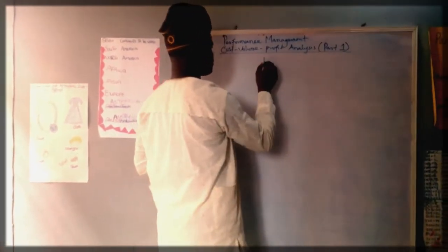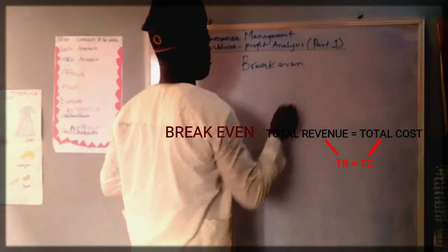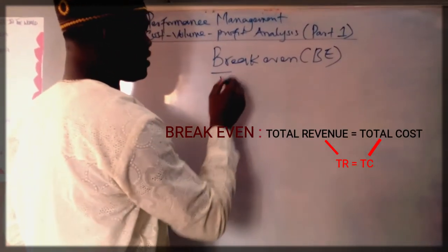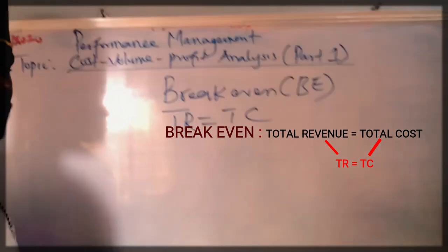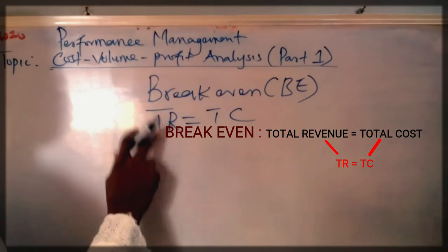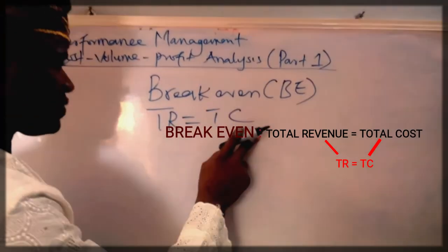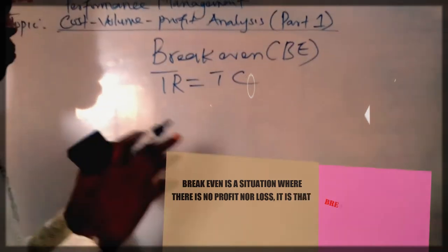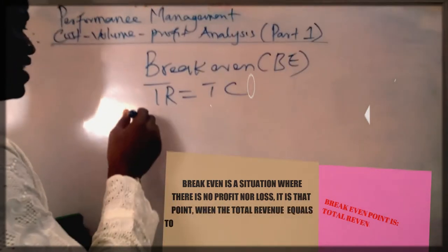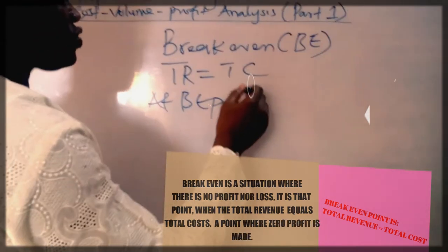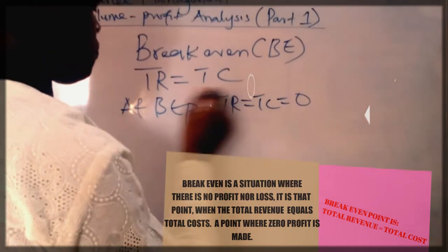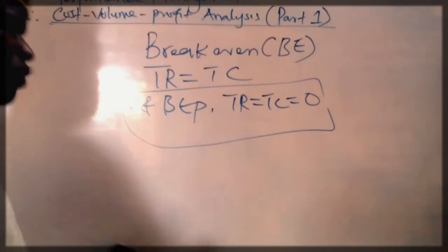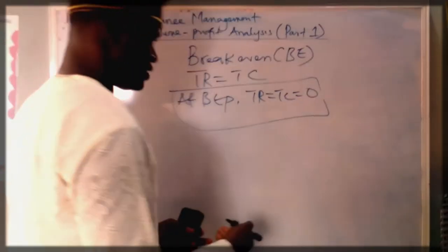When you say break even, break even is the situation where the total revenue equals the total cost. Break even is that point where your total revenue equals total cost. It is that point where there is zero profit. It is that point where there is no profit or loss. That is, at break even point, total revenue equals total cost, giving us zero profit. So, as management, if I understand the units to produce to at least break even, that is good.